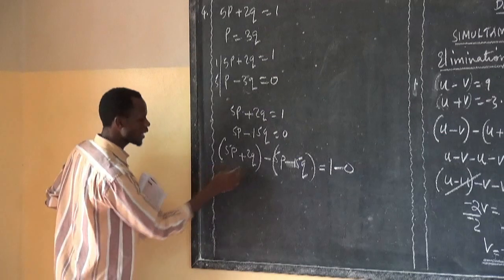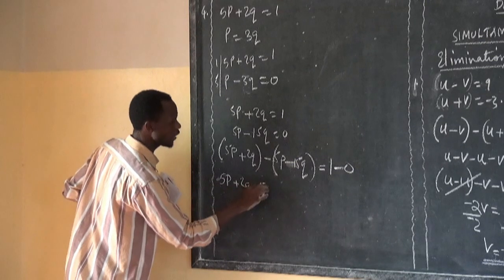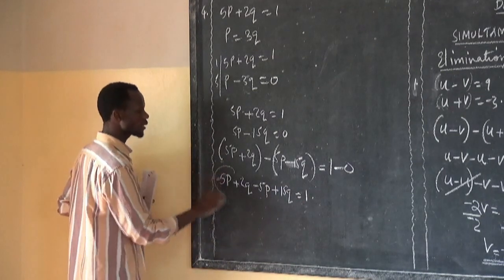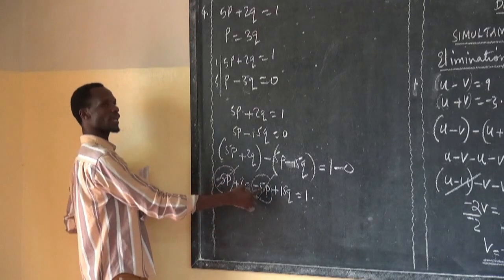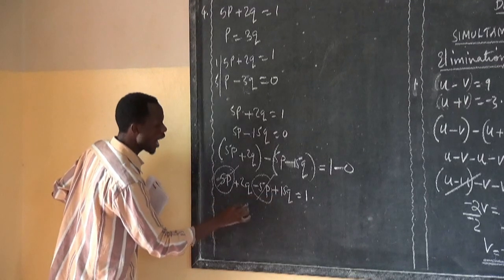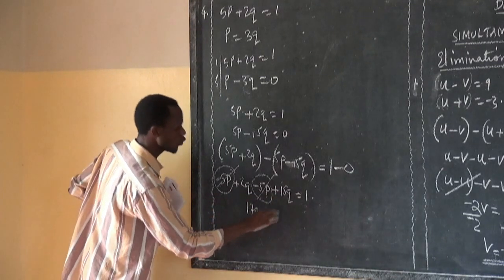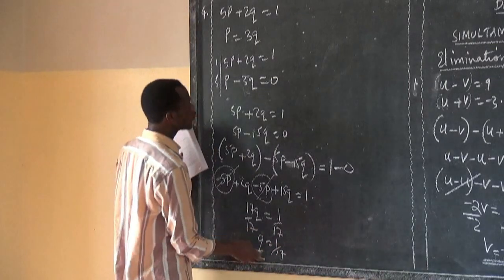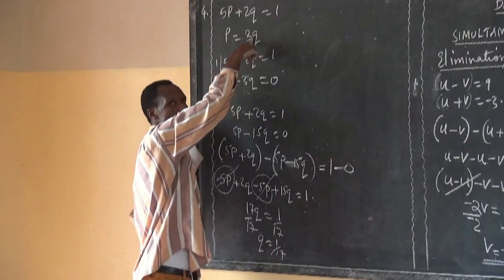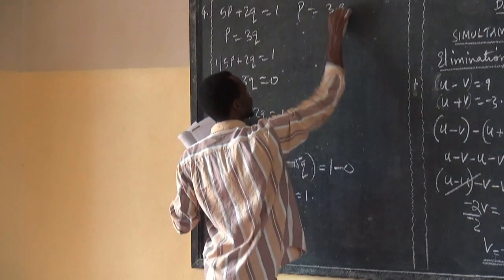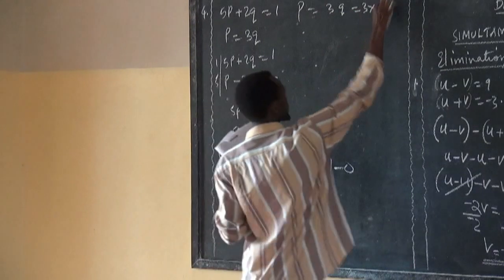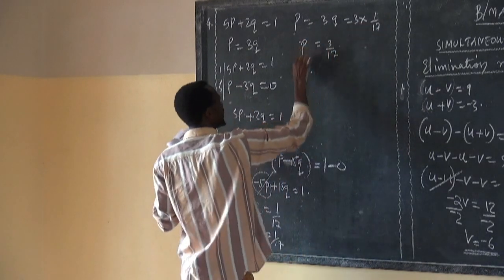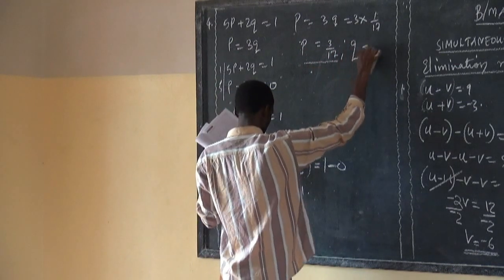Open the bracket. We have 5P plus 2Q, minus 5P plus 15Q, equals 1. The positive and negative 5P terms cancel. We have 2Q plus 15Q equals 1, giving 17Q equals 1. Divide by 17 both sides: Q equals 1 over 17. After getting the value of Q, choose one of the equations. From P equals 3Q, we get P equals 3 times 1 over 17, which equals 3 over 17. So P equals 3 over 17 and Q equals 1 over 17.